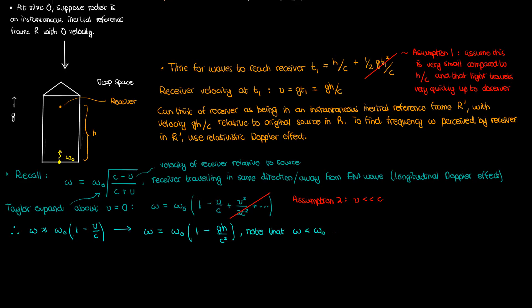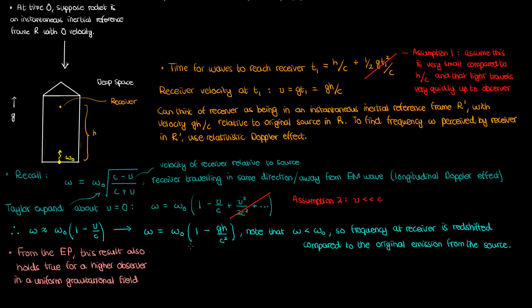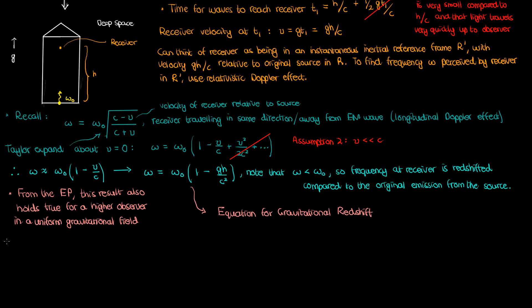You'll notice that omega is less than omega naught, which suggests that the receiver at the top of the rocket ship perceives the electromagnetic wave has been redshifted compared to how it started from the source. Because of the equivalence principle, I can conclude that in a uniform gravitational field, a receiver higher up in the field perceives the same effect — signals emitted from the surface are redshifted, or shifted to a lower frequency. This phenomenon is known as gravitational redshift.